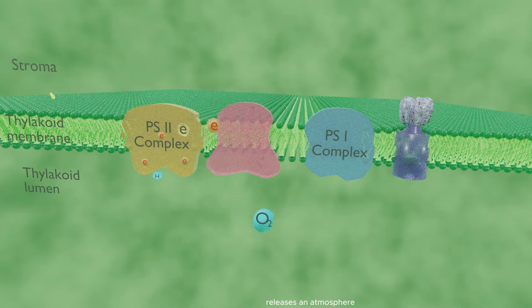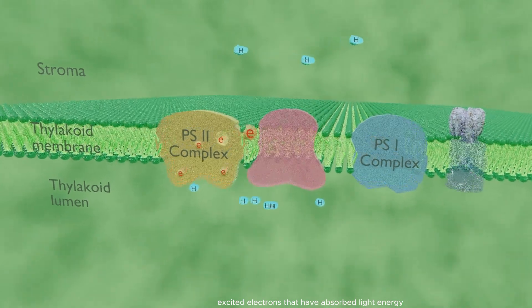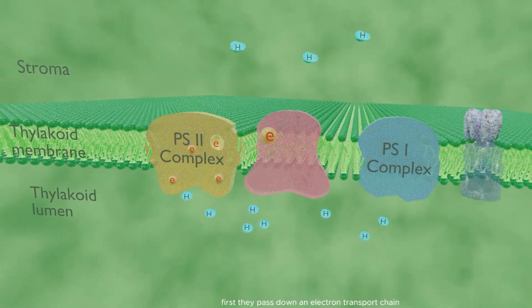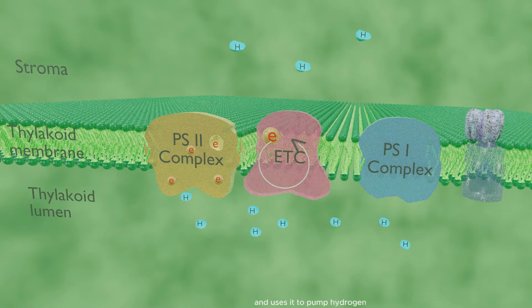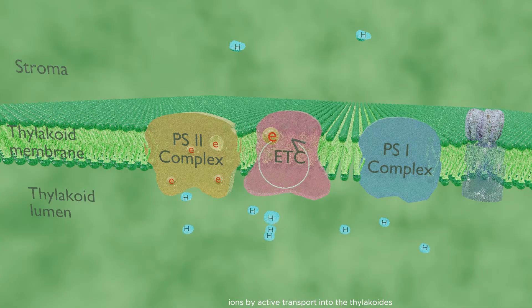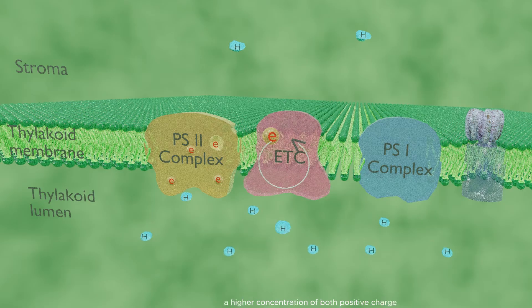Excited electrons that have absorbed light energy are unstable. First, they pass down an electron transport chain which captures their energy and uses it to pump hydrogen ions by active transport into the thylakoids. These concentrated ions store potential energy by forming a chemiosmotic or electrochemical gradient - a higher concentration of both positive charge and hydrogen